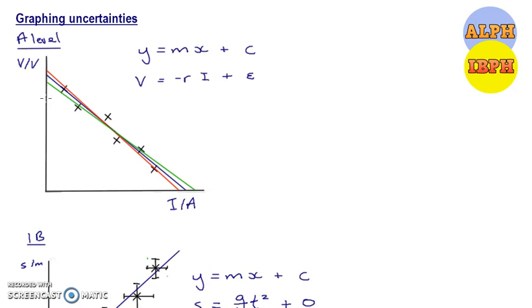The first graph we're going to look at, this is for the A-level part, is a graph of terminal potential difference. So that's the potential difference at the end of a cell with a load applied against current. You'll have seen this equation, this graph in your required practical 6, finding the EMF and the internal resistance of a cell or a power supply.